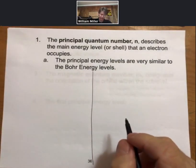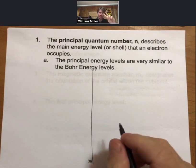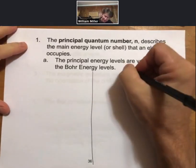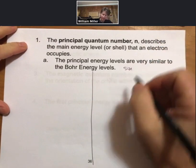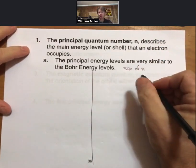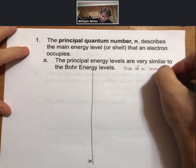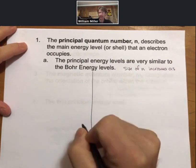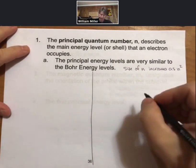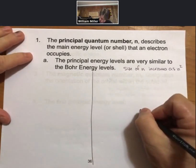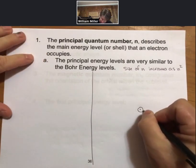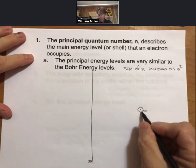And we're going to look at the Bohr energy levels in terms of two variables. So the first one, and I'm going to do this on the right here, is going to be size. And the size of n, which are the principal energy levels, increases as n squared.